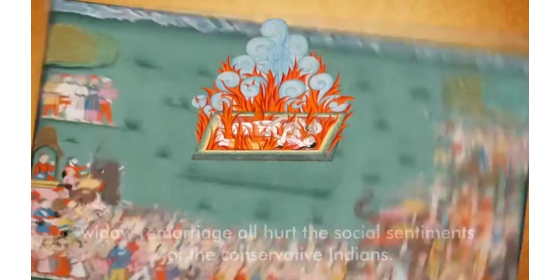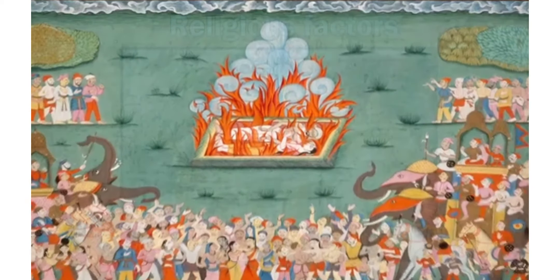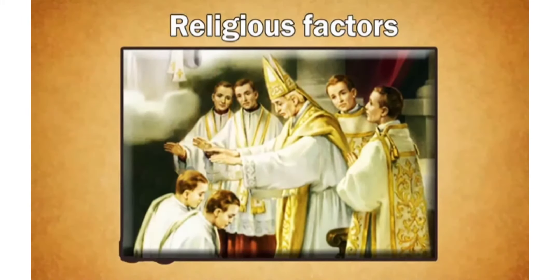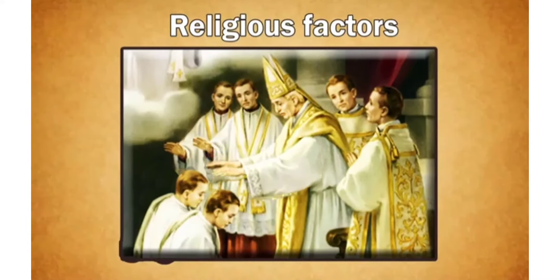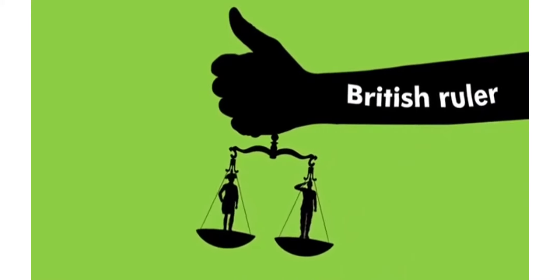Bahadur Shah Zafar was tried for treason, rebellion, and murder. He was exiled to Rangoon, where he died in 1862. His sons were shot in cold blood at the Kabuli Gate. The residents of Delhi were looted and massacred by the British forces.